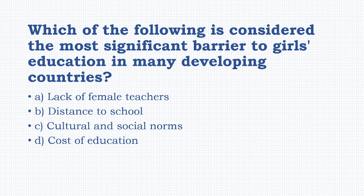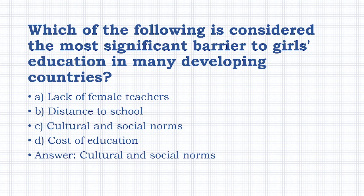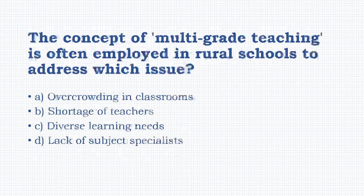Which of the following is considered the most significant barrier to girls' education in many developing countries? Options: lack of female teachers, distance to school, cultural and social norms, cost of education. The answer is: cultural and social norms.